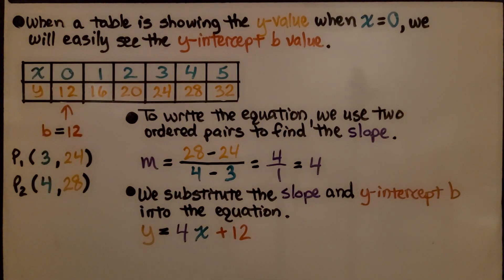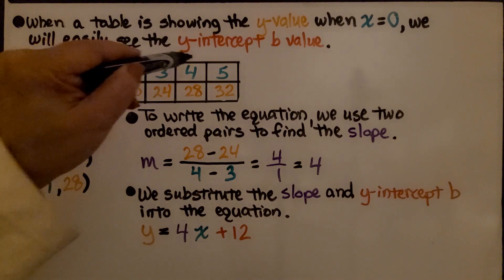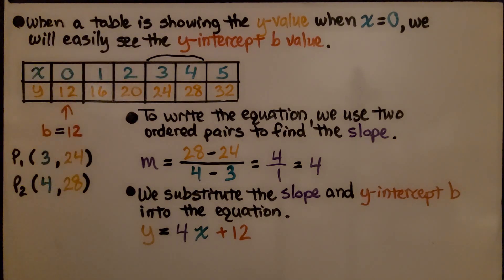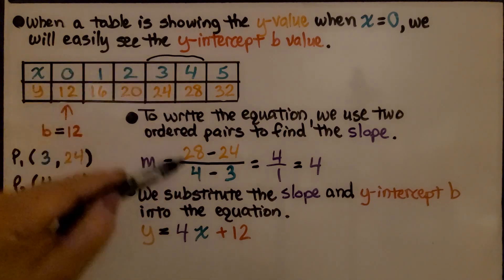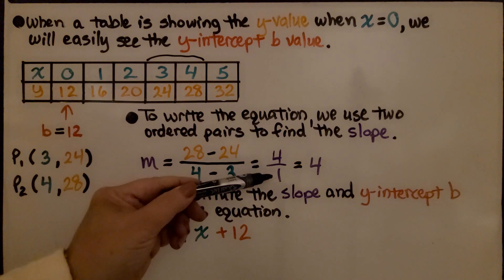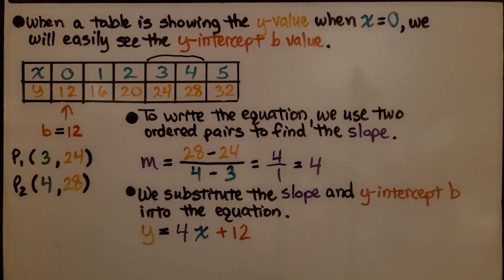When a table is showing the y value when x is 0, we'll easily see the y-intercept b value. We know it's 12. x is 0, y is 12, the y-intercept is 12. To write the equation, we use two ordered pairs to find the slope. I decided to use these two. We have 28 minus 24 and 4 minus 3, we get 4 over 1, our slope is 4. We substitute the slope and the y-intercept b into the equation, and we have y equals 4x plus 12.